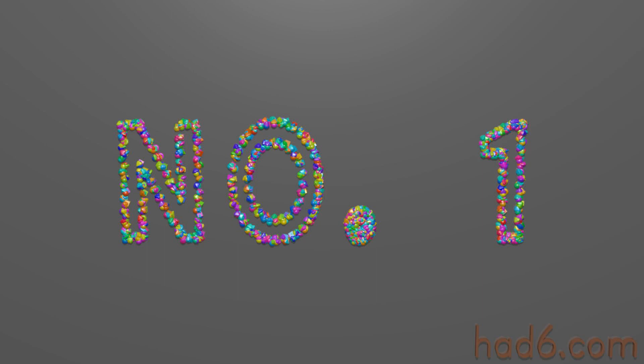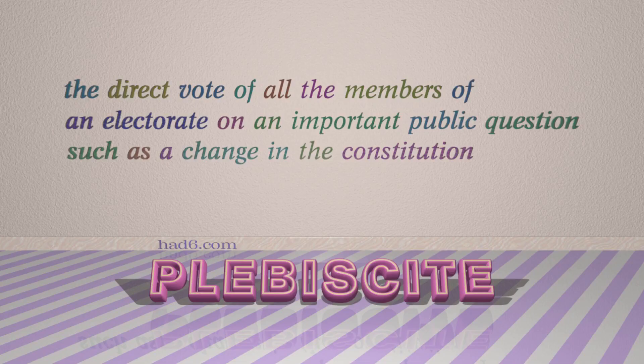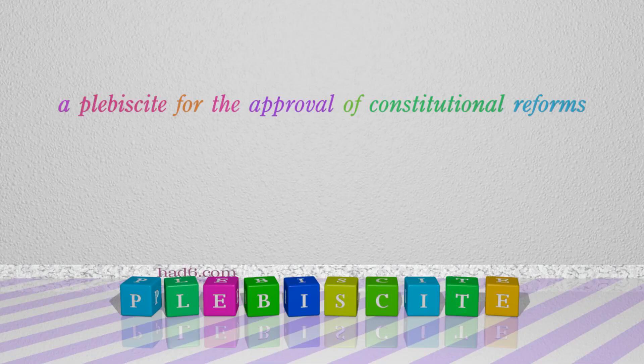Number 1: Plebiscite, which means the direct vote of all the members of an electorate on an important public question such as a change in the constitution. For example: A plebiscite for the approval of constitutional reforms.